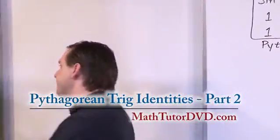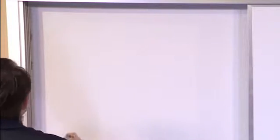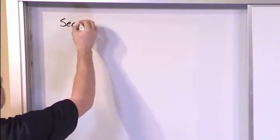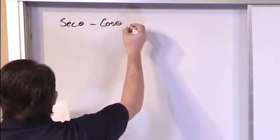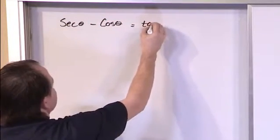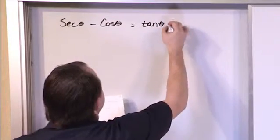And so let's just get started with that. What if you had something like secant of theta minus cosine of theta is equal to tangent theta times sine of theta.